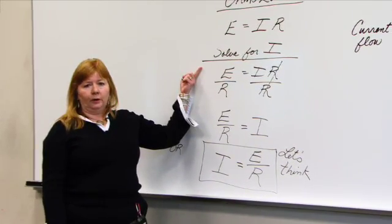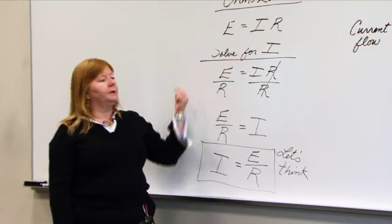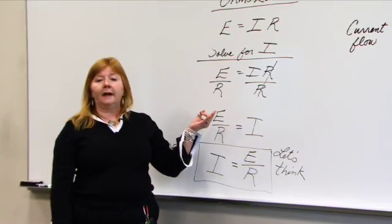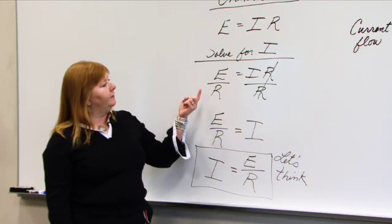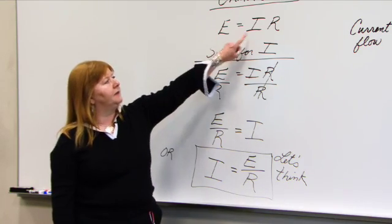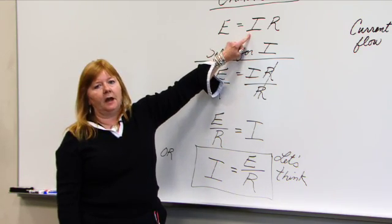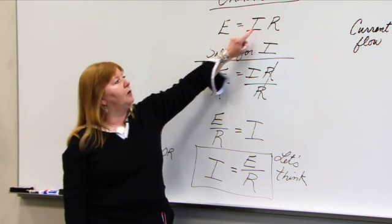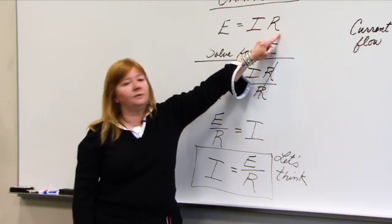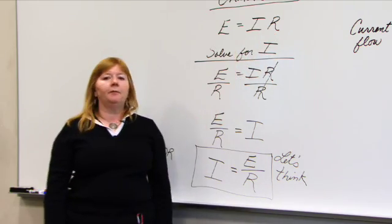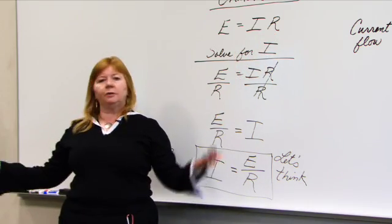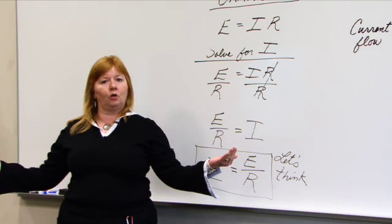If I solve for current, I will change the formula to reflect looking out of current's view. I'm going to solve for I. The operation affecting I right now is multiplication by resistance, and I do not want this R here. So I will use opposite operations.